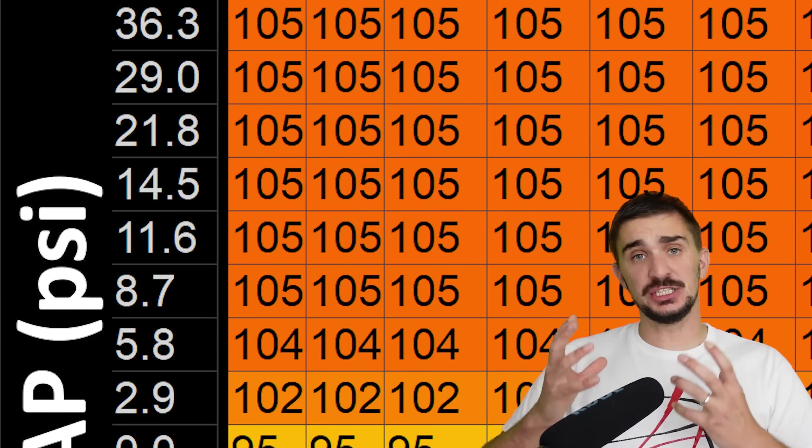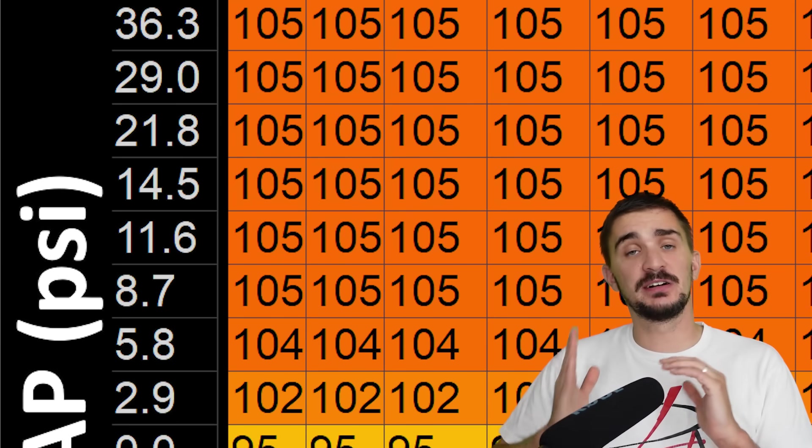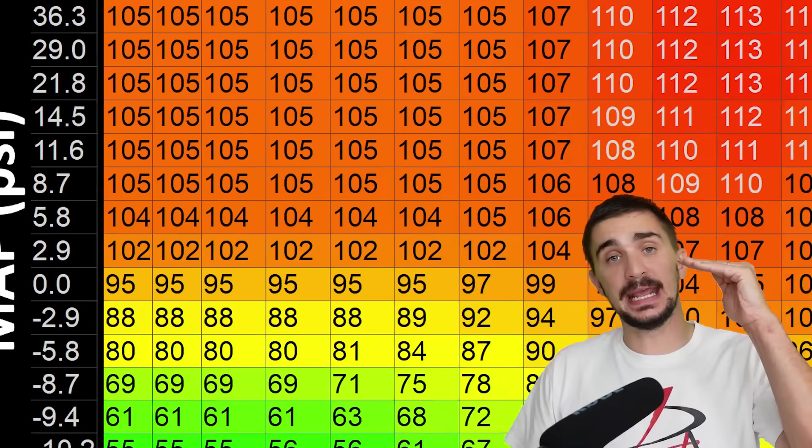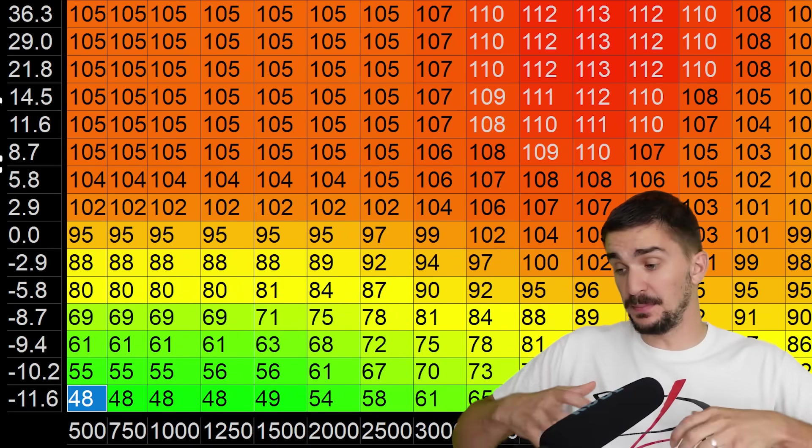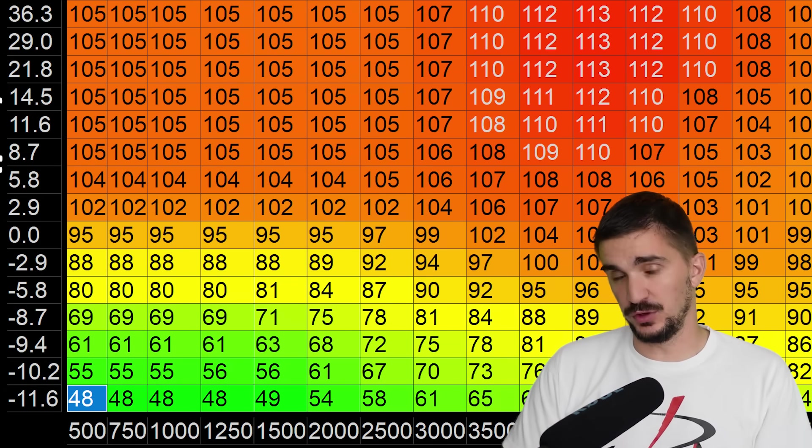So volumetric efficiency numbers essentially tell the ECU how much air is inside the engine at any particular intersection of engine RPM and engine load. By knowing the mass of air inside the engine, the ECU can then match that mass of air with an appropriate mass of fuel to achieve a desired air fuel ratio.